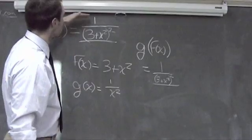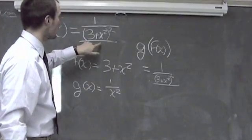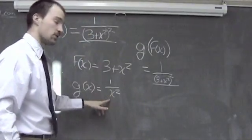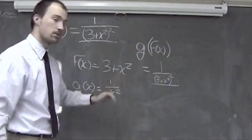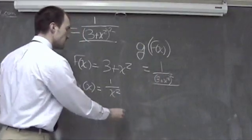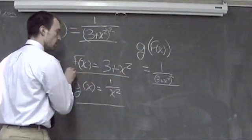Another way to have done this would be to say we could have f of x as the 1 over x squared, or g of x as the 3 plus x squared, and then our composition changes, but these are the two functions that we're made of.